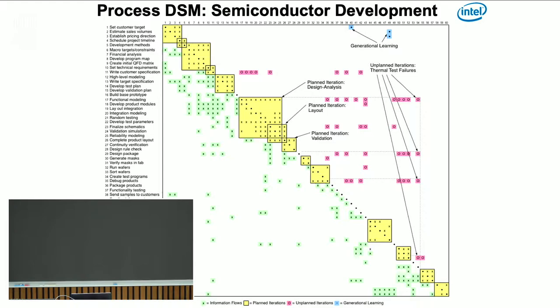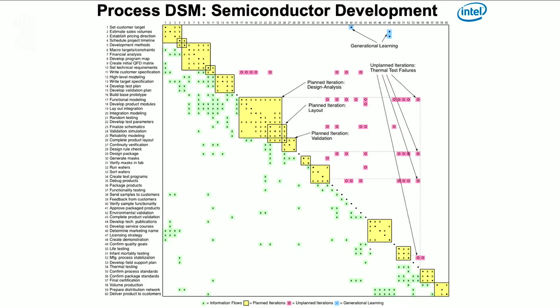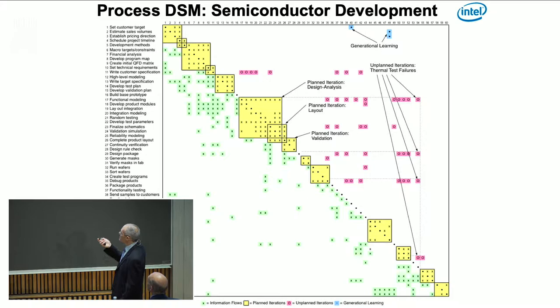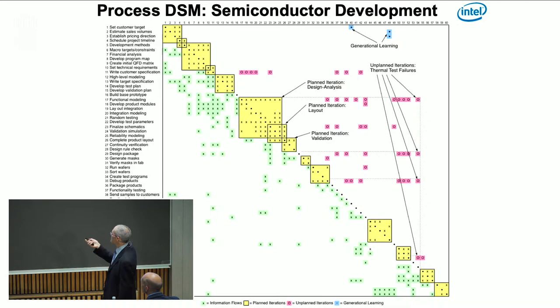Design and decomposition tasks include high-level modeling, target spec, validation planning, functional modeling — which really means circuit design — schematic design, layout, and geometrical layout of the portions of the semiconductor chip. The second half is about building, testing, validation, quality control, and validation that everything works right — the integration side of the process. From roughly number 30 down it starts: generate masks in the fab, make wafers, package the product into chips, sample functionality out to customers, validation of environment and function, life testing, thermal testing, certification, production, and deliver product at the bottom.